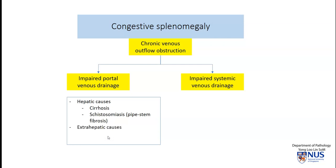There can also be extrahepatic causes — for example, intra-abdominal tumors or intraperitoneal infection that may give rise to thrombosis in the portal venous drainage system.